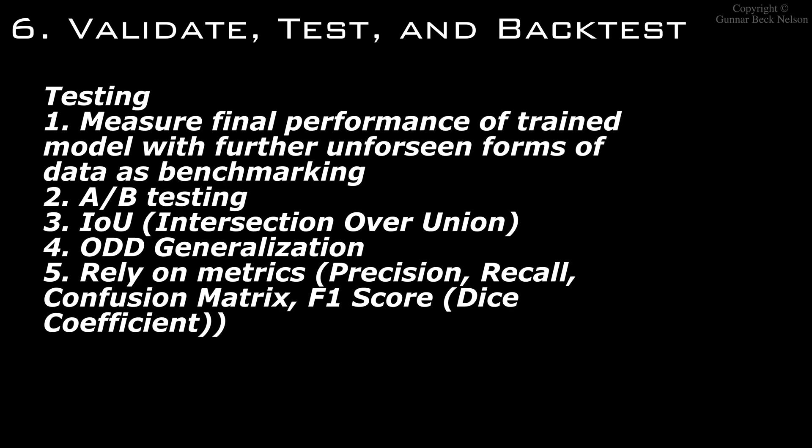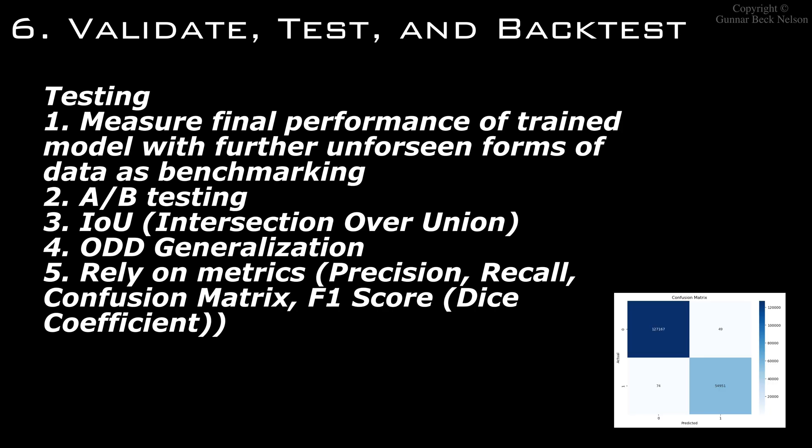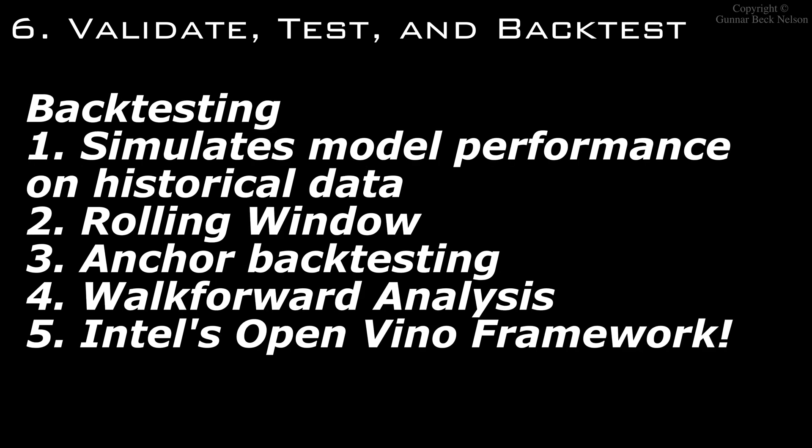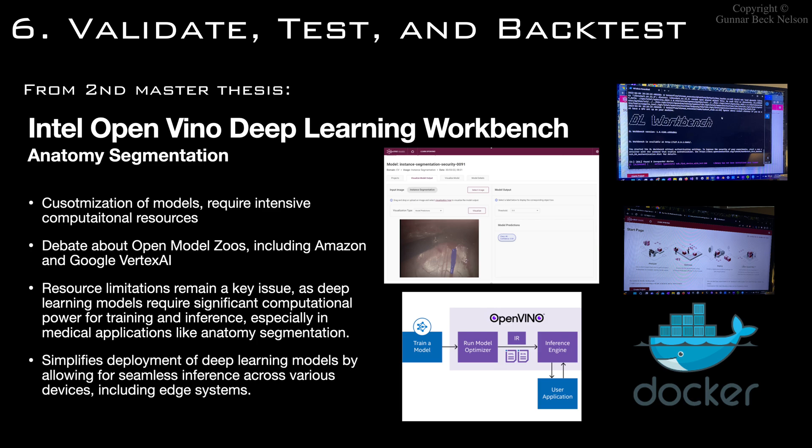We then have our test set, which is used for performance benchmarking. Common techniques include A/B testing, intersection over union, generalization tests, and metrics such as precision, recall, confusion matrix, and F1 score — also known as the Dice coefficient. Back-testing techniques include rolling window, anchor back-testing, and walk-forward analysis. We also use Intel's OpenVINO framework to compare model performances; it has a deep learning workbench available via Docker with an open model zoo.